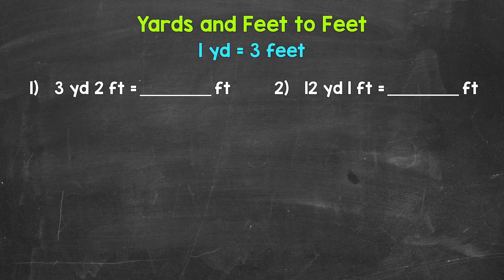Let's jump into our examples starting with number one, where we have three yards two feet equals how many feet. In order to convert this to just feet, all we need to do is convert three yards to feet and then add the two feet to whatever we get for that.